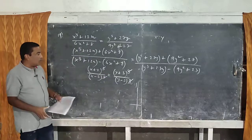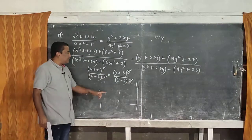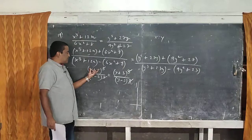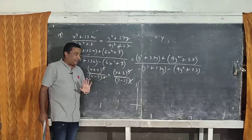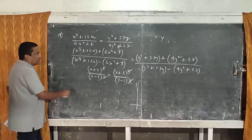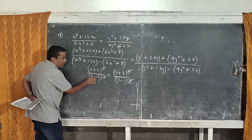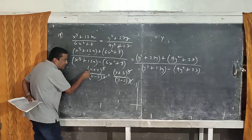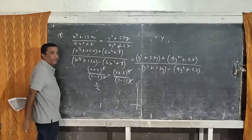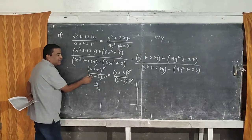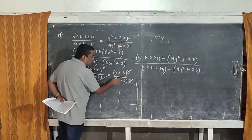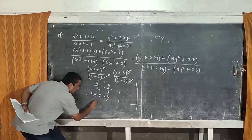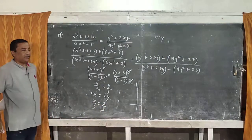Similarly, y³+27y+9y²+27 = (y+3)³, and the denominator becomes (y−3)³. These like terms cancel. Now there are three approaches: cross multiply (lengthy), apply componendo-dividendo again (takes time), or use the simplest method — since it is still in the form (a+b)/(a−b) = (c+d)/(c−d), directly write a/b = c/d, giving (x+2)/(x−2) matched to (y+3)/(y−3). Cross multiplying gives 3x = 2y, so x/y = 2/3.